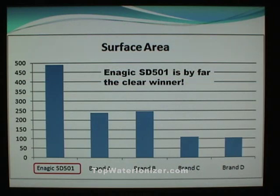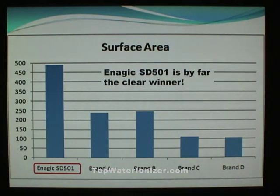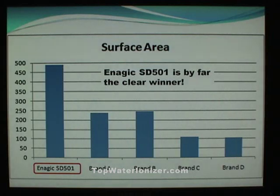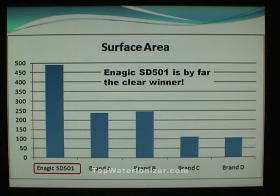Looking at the surface area of the electrolysis plates, the Enagic SD501 has a surface area of 490 square inches. The next closest that I'm aware of is Brand B, which is less than 250 — actually less than half of what the Enagic SD501 has for surface area. Brand A, Brand C, and Brand D are even less.